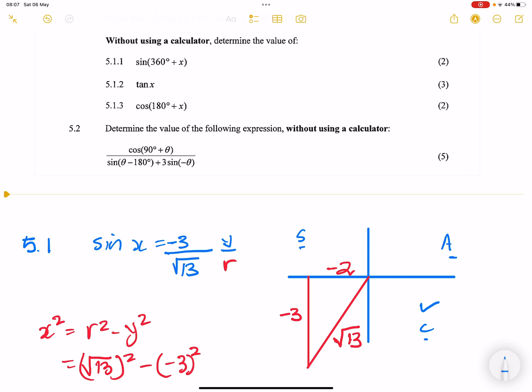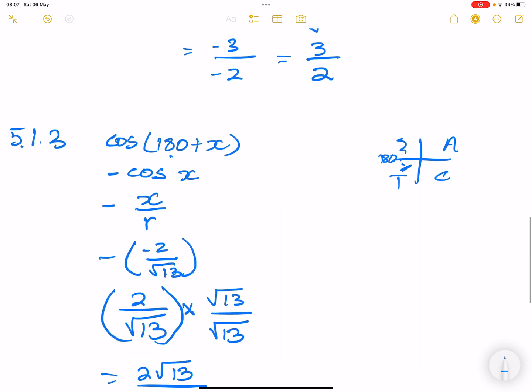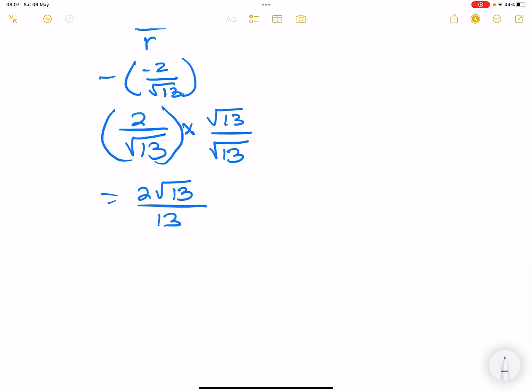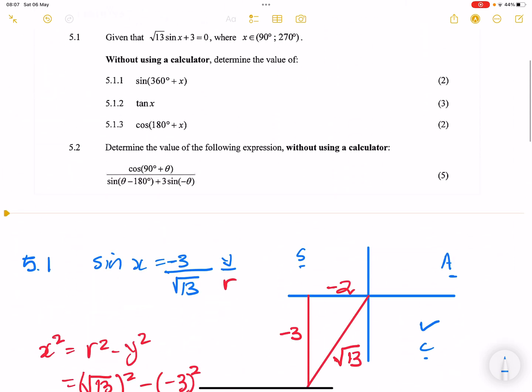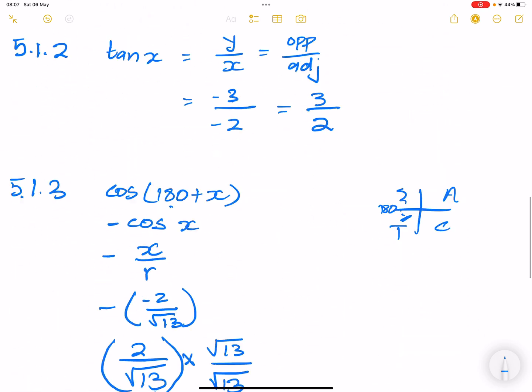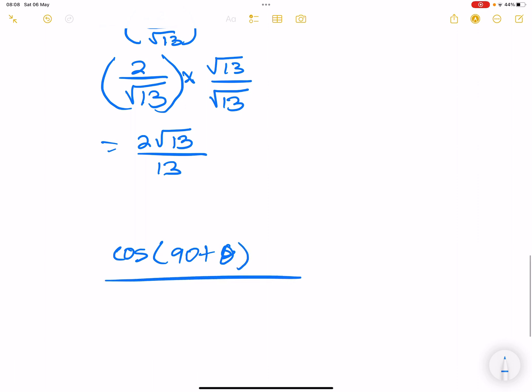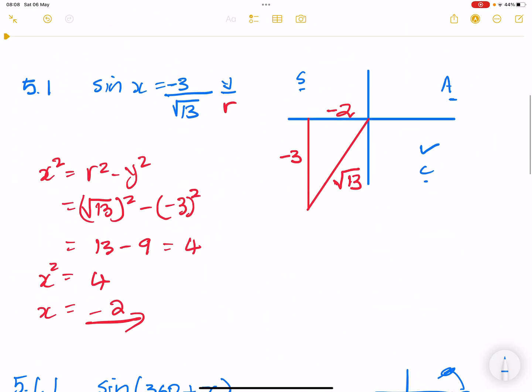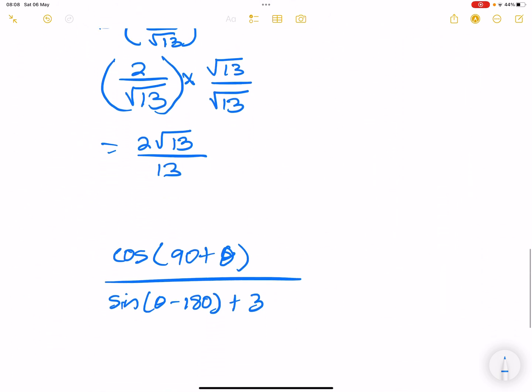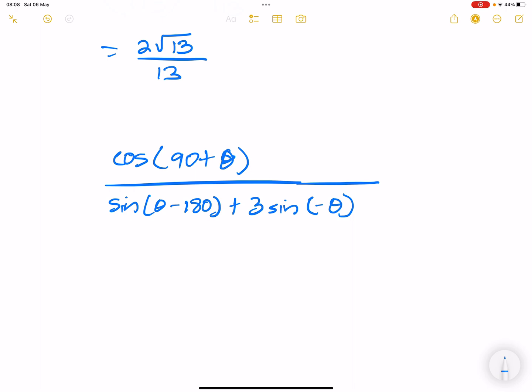Let's go to the next question. They say determine the value of the following expression without using a calculator. We've got cos(90° + θ) in the numerator, and in the denominator sin(θ - 180°) + 3sin(-θ). Now, what we're going to do is use our reduction formulae to try and obtain that solution.